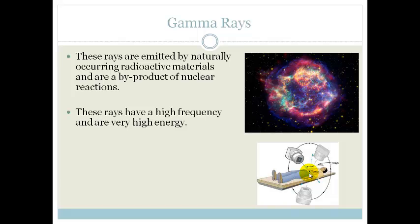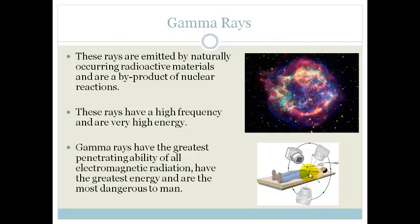We are using gamma rays in medicine to help us basically nuke a tumor — we are trying to get rid of the tumor by using gamma radiation. They have very high frequency and therefore very high energy. They have the greatest penetrating ability of all electromagnetic radiation and are therefore the most dangerous. Gamma rays are given off by nuclear power plants, which is why we need to be very careful near them, but if very focused, they can be used to kill tumors.